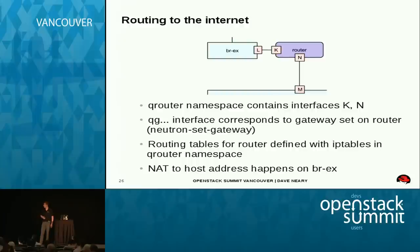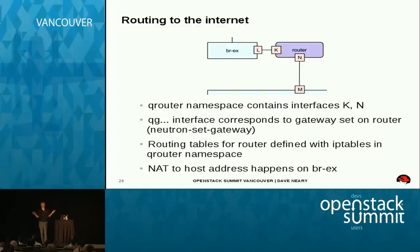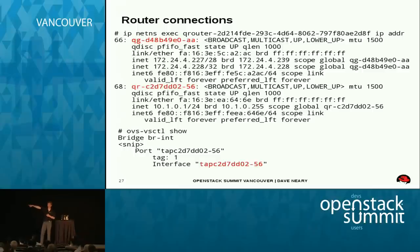On the routing side, we get to the router, which is essentially a set of routing tables and iptables. Traffic is sent on to BRX — floating IPs are handled there. The routing tables for the router are defined with normal iptables on the control host in that namespace. We've got two connections: QG, which is the gateway associated with the router, and QR, which is the router interface back to br-int. Looking at OVS vsctl, interface tap-C2D7 corresponds to the router QR. That's how it works with ML2.